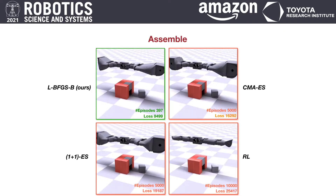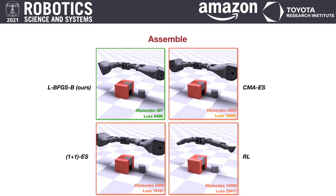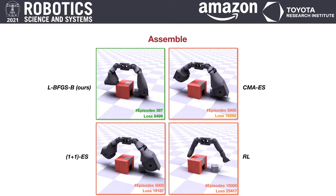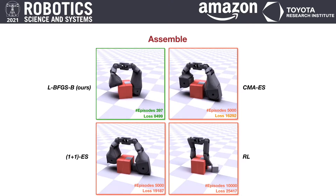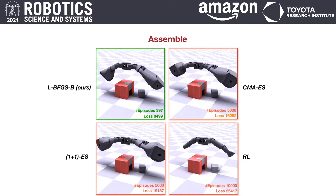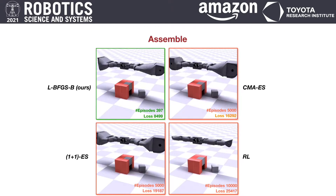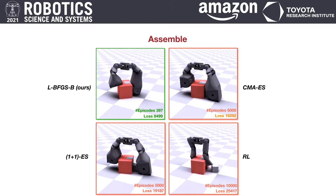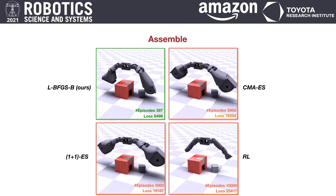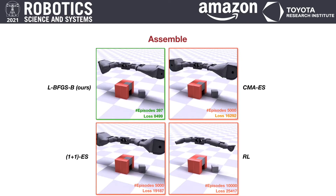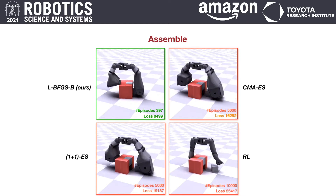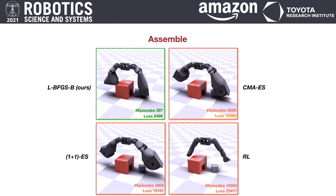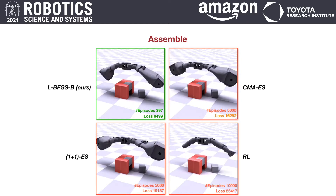The next task requires two fingers to collaborate together to accomplish an assembling job. The optimized morphology has a longer right finger and shorter left finger to be able to reach two objects of different sizes. Furthermore, the large and flat fingertip helps to push the cube more stably than a thin and curved finger.